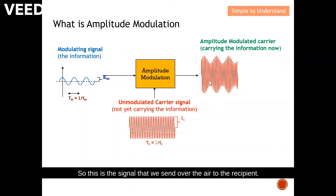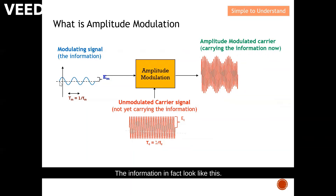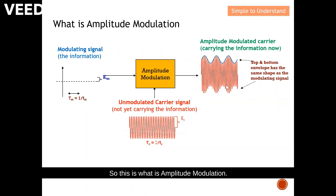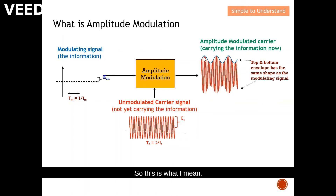This is the signal that we send over the air to the recipient. We are not keen to receive this raw modulated signal — the information actually looks like the modulating signal. What we need to do is trace the envelope, and we can easily recover the original information. The top and bottom envelope have the same shape as the modulating signal, so by copying the envelope, you will be able to recover exactly the modulating signal.